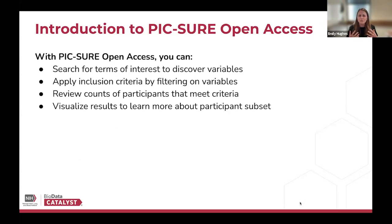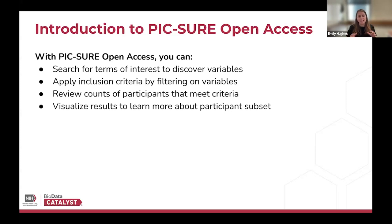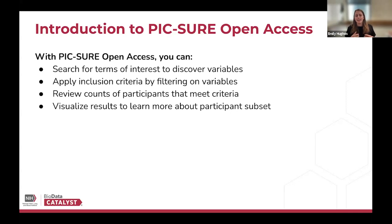With PIC-SURE Open Access, you can search for terms of interest to discover variables. If you're interested in certain phenotypes or clinical outcomes, you can type those into the search bar. After reviewing matching variables, you can apply a filter that acts as inclusion criteria to build a cohort. Once you add that filter, you're able to review counts of participants that meet the query criteria, and you can also visualize distributions of the variables you've added to your cohort.